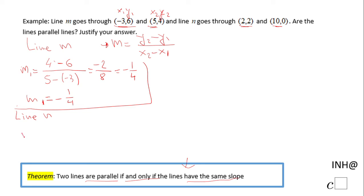The slope of line n, which I'm going to call m₂, is... Now I'm going to call this point 1 for line n: (x₁, y₁) and (x₂, y₂). So we're going to have y₂ minus y₁, which is 0 minus 2, and x₂ minus x₁, which is 10 minus 2.